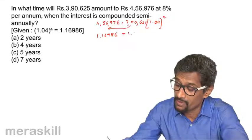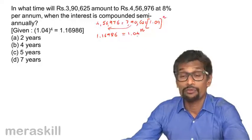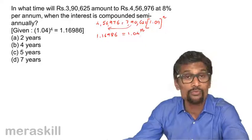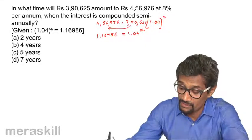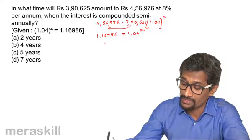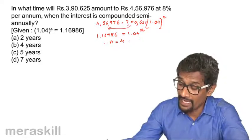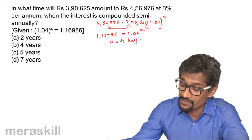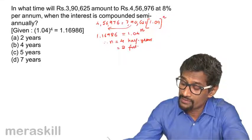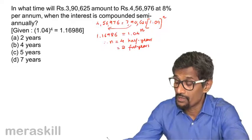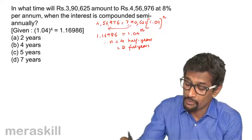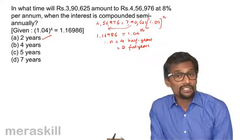We get approximately 1.04 raised to N equals 1.16986. If this information is not given, you keep multiplying 1.04 by itself to find how many times to get this value. Here it is given that 1.04 raised to 4 equals the required value, so N equals 4, meaning there are 4 half years. In 4 half years, it will be 2 full years.